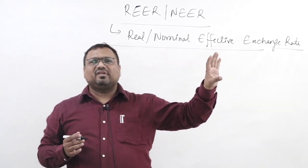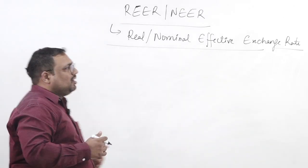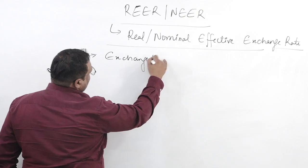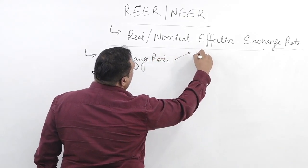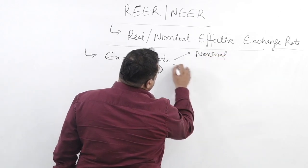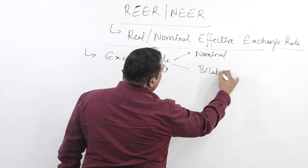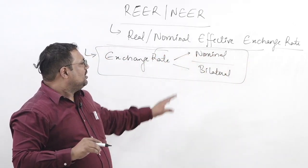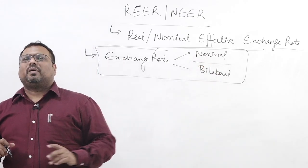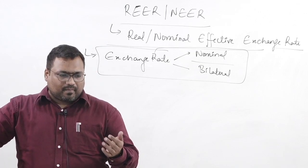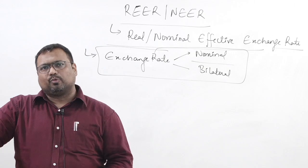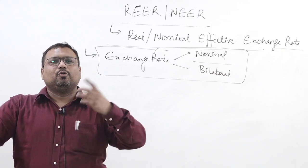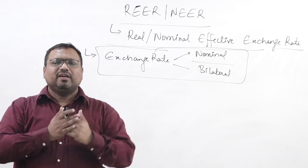When we say 'exchange rate,' the word by default means it is both nominal and bilateral. The way we use exchange rate in day-to-day transactions is always nominal as well as bilateral. For example, when we say the dollar is now almost 82 to 83 rupees, that is the nominal value of the rupee and it is also bilateral — meaning it is the rate against the dollar, between two currencies.